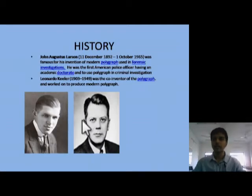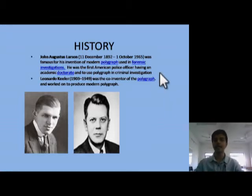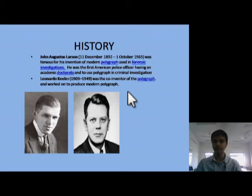The polygraph was discovered by John Augustus Larsen, who worked with two polygraph components: the sphygmomanometer and galvanic skin responses. Later in the 1930s, Leonardo Keeler joined and co-invented the polygraph machine, which he developed using a pneumograph and a polygraph chart.